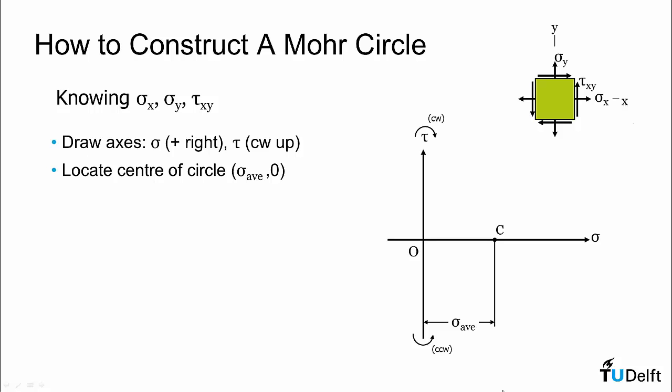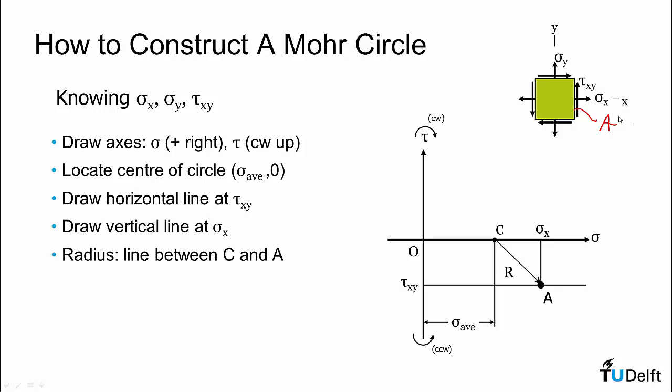We will then locate the center of our Mohr circle, and it will be located on our normal stress axis shifted by a distance sigma average. Now we need to locate one point. We have the center, but we should locate one point on the Mohr circle, and then we can draw it. So I will pick this right hand face where we have tau xy, which produces a counterclockwise rotation about the center of this point. So I will draw a horizontal line at tau xy going across. Now I need a normal stress coordinate, and that will be sigma x. So I'll take sigma x, draw that line down. Its intersection is point A, which corresponds to this face. I can now draw the radius, and with the radius point and center, I can actually draw my Mohr circle.